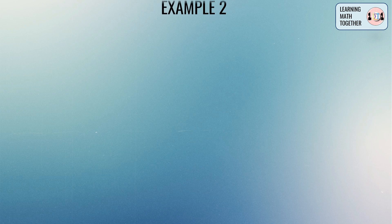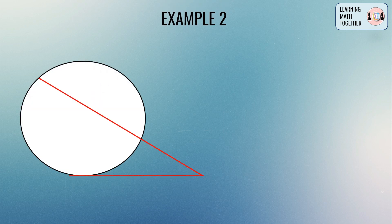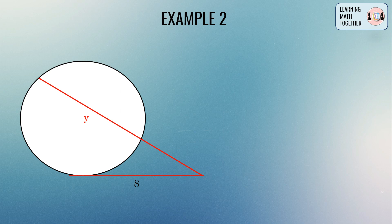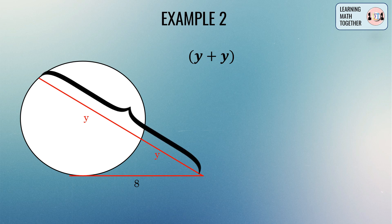For the last example, we have the tangent segment equal to 8 units. One portion of the secant segment is y and the other portion is also y — we have two unknown values of the same length. We begin by creating the formula according to the theorem: get the product of the secant segment and its external segment.